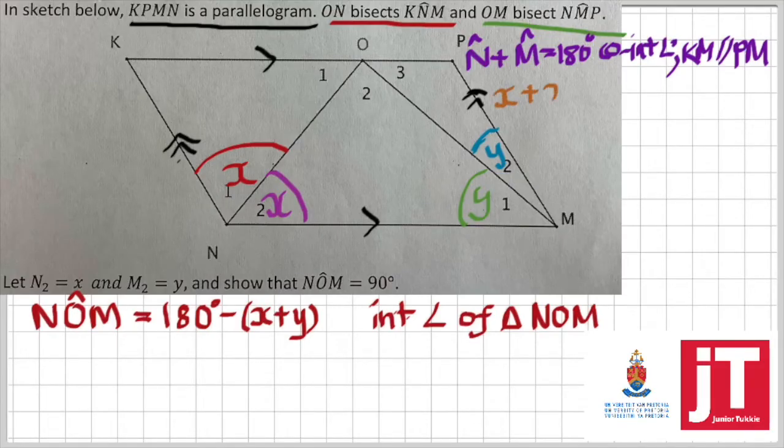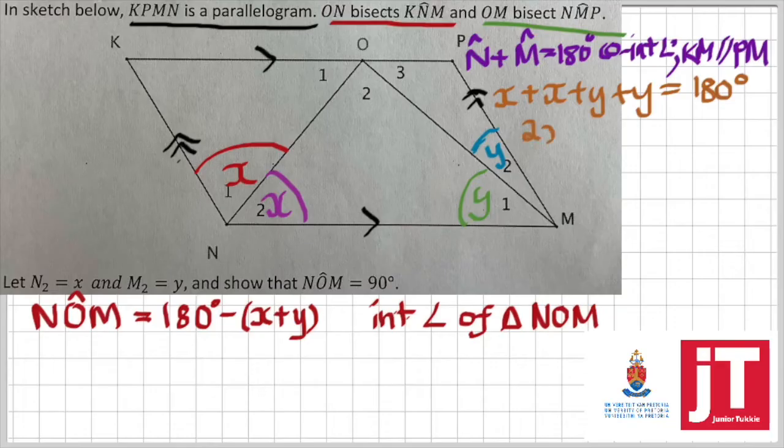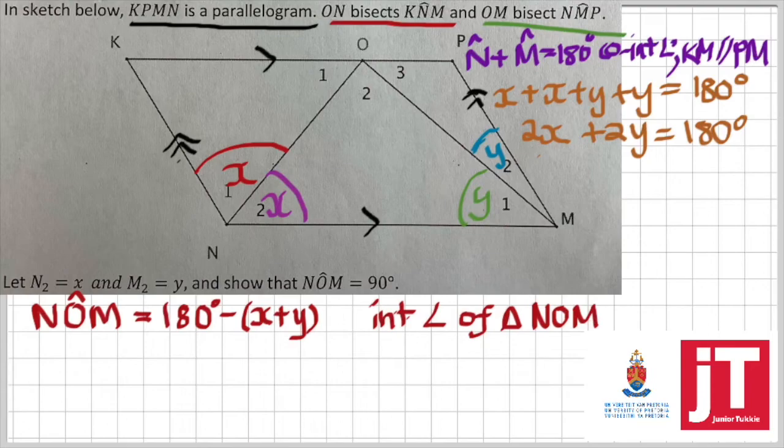We then simplify it by substituting our unknown values x and y. So, we can say x plus x plus y plus y, that should give us 180 degrees. That would be equivalent to 2x plus 2y, which is equal to 180. Now, we can divide that whole statement by 2 to simplify it so that we get x plus y is equal to 90 degrees.